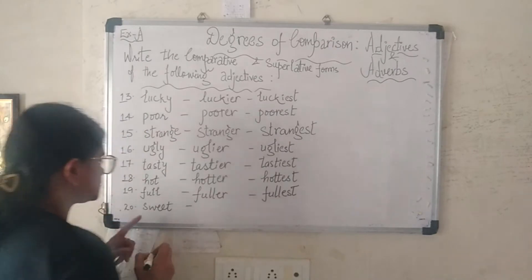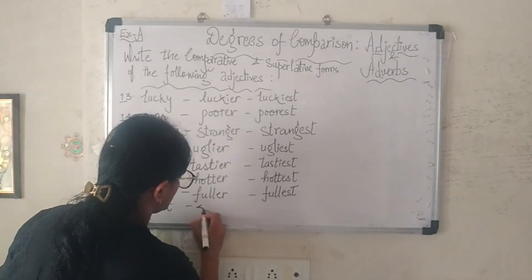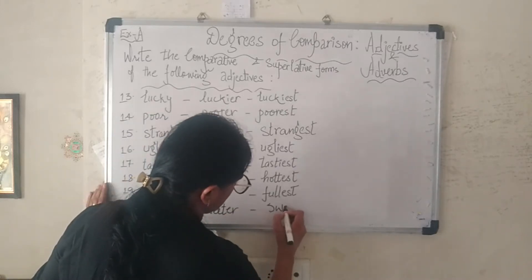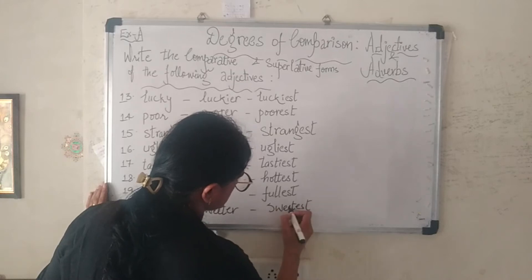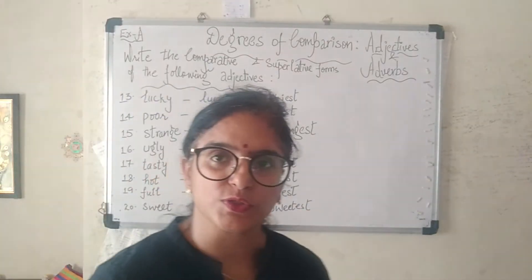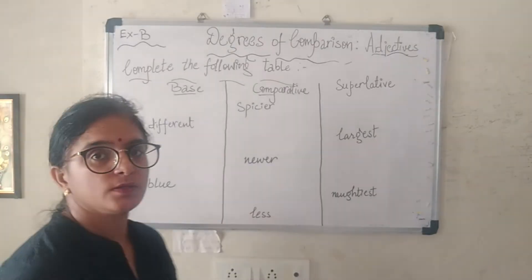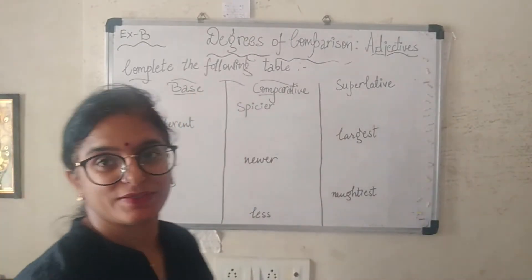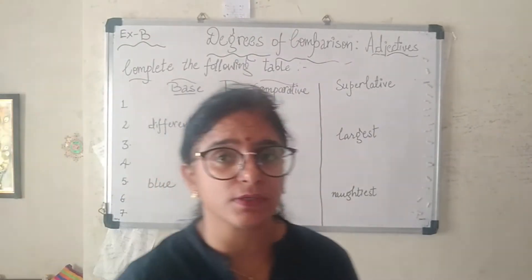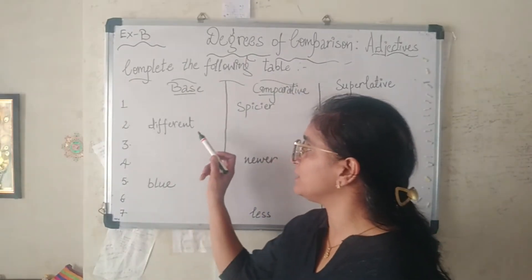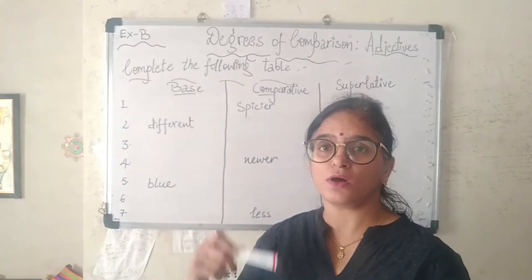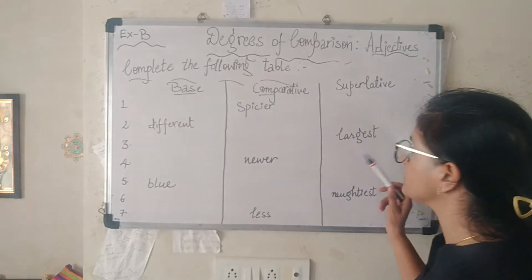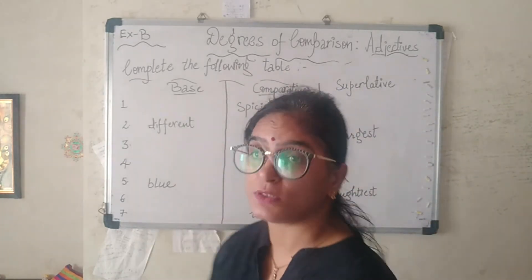The last adjective of Exercise A is 'sweet': 'sweeter' and 'sweetest'. That's all about Exercise A. Let's move on to Exercise B: complete the following table. You have to complete the table by changing the given adjectives into the comparative or superlative forms — in some cases, a comparative is given and you must also find the base form.